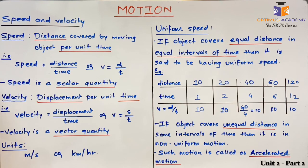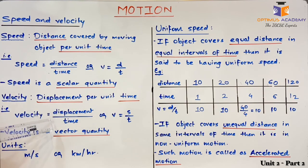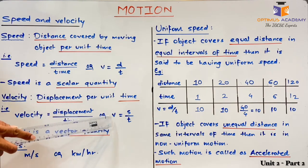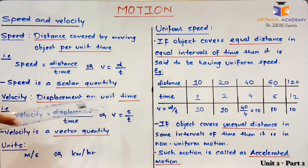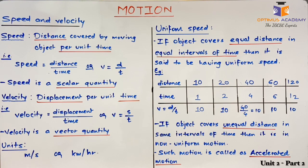Next we have velocity. The definition of velocity is displacement per unit time. It can be written as velocity equals displacement upon time, and in symbolic form V equals S upon T, where S is the symbol for displacement in physics. We know that displacement is a vector quantity — whenever there is a change in direction, the value of displacement also changes. As velocity depends on displacement, velocity is also a vector quantity. So to explain velocity we have to explain both the magnitude and direction of the velocity of the object.